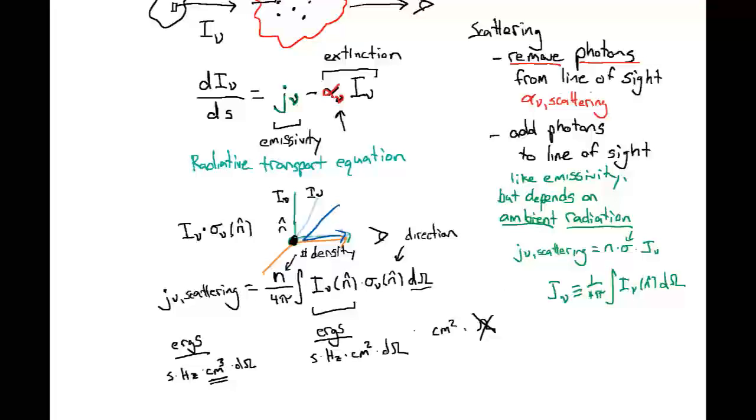And by doing so, I've made a simplifying assumption here that the cross-section for scattering is not direction dependent. In practice, the scattering cross-section may be direction dependent, in which case it needs to be inside the integral. But to help simplify things, I've made this assumption here in writing down this equation.